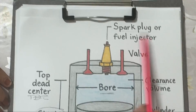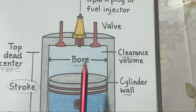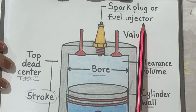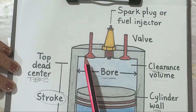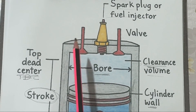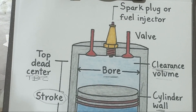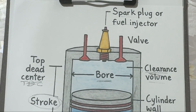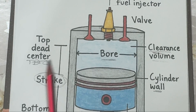At the top of the cylinder you will find either a spark plug or a fuel injector, depending on the engine type. In a petrol engine, the spark plug ignites the air-fuel mixture with a spark. In a diesel engine, the fuel injector sprays fuel into the highly compressed air, causing it to ignite automatically. This combustion produces high-pressure gases that push the piston downward — and that's the power stroke that drives the engine.